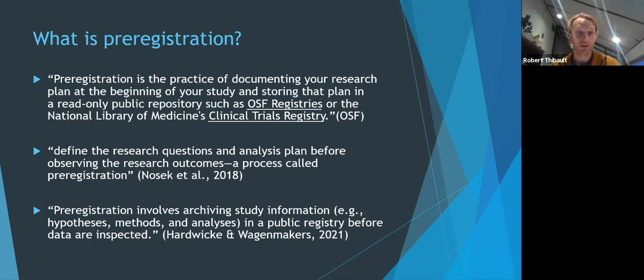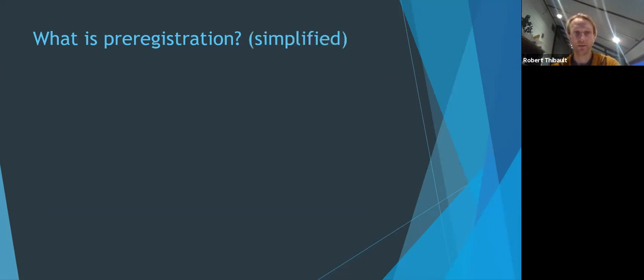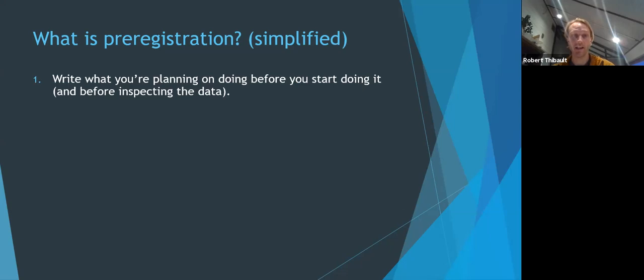Now I wouldn't stress too much about what the exact definition of pre-registration is and I'll give kind of my simplified definition that I find useful which is just requires two things so the first thing is that you write what you're planning to do before you do it. So if you're going to run an experiment you just write what you're going to do for that experiment before you do the experiment. If you're going to do an analysis you write that analysis plan before doing the analysis but also before looking at the data.